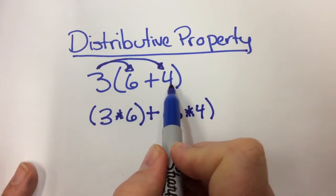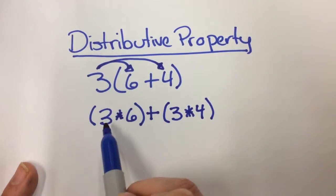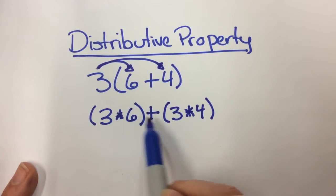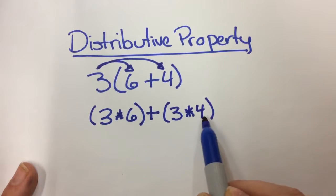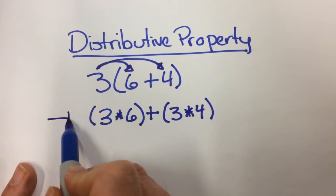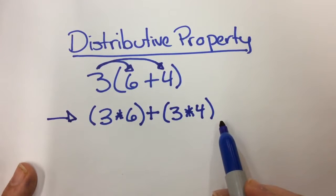So 3 times the quantity of 6 plus 4, when I distributed that, becomes 3 times 6 plus 3 times 4. So when you're doing this assignment, I want to ask you to write it out just like this.